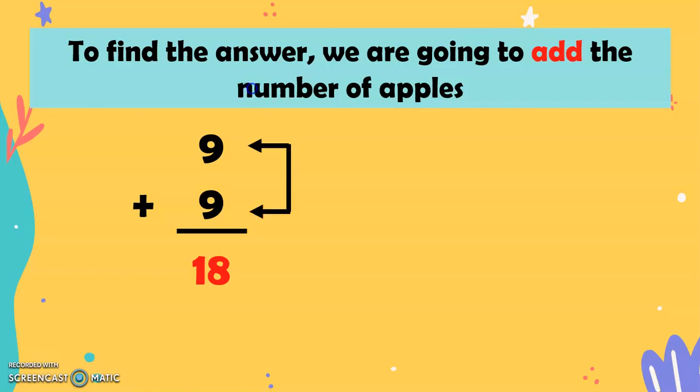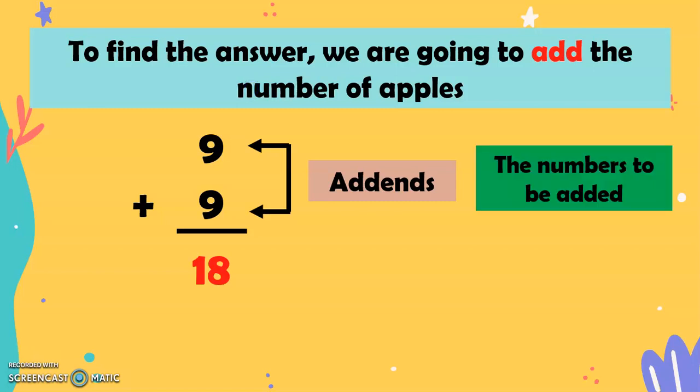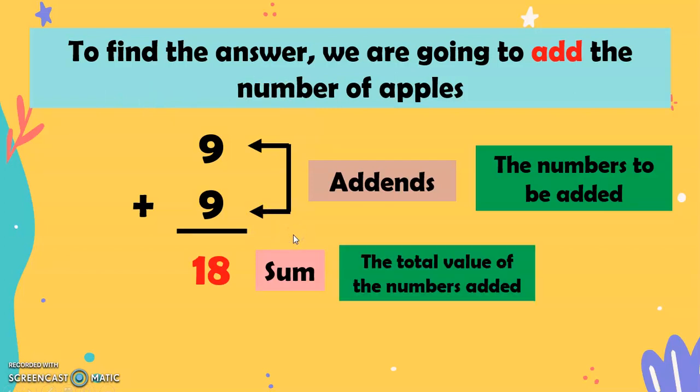And these two numbers here, the 9 and 9, they are what we call the addends. And the addends are the numbers to be added. And now, after we add the addends, then we will have what we call the sum. And the sum is the total value of the numbers added.